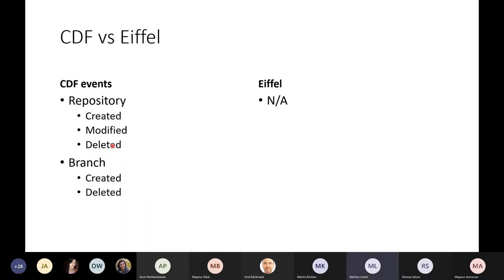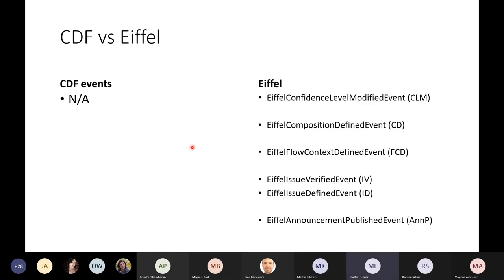I can see that the repository and branch events are not really captured in Eiffel, so there's a bit more here but possibly missing the direct commit thing. There are several events without correspondence: for example, Eiffel's confidence level modified event is something CDF doesn't have. Composition defined events have been discussed. It feels like if you're working with hardware you'd need these, but if you're coming from a pure software container-based world you don't see as much usage for them.